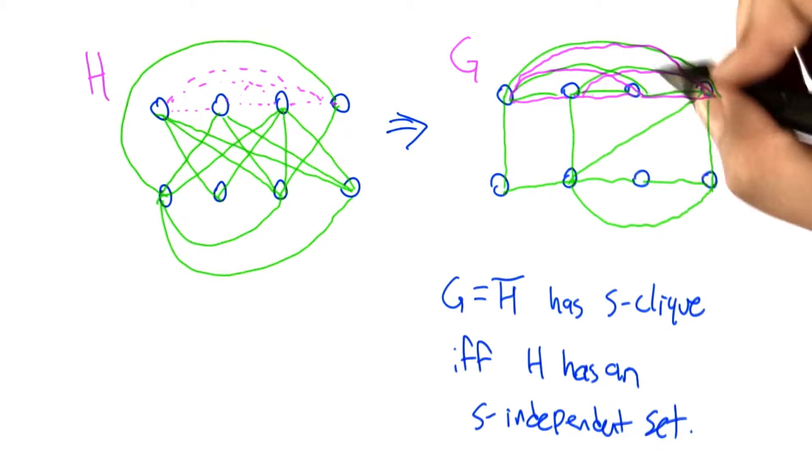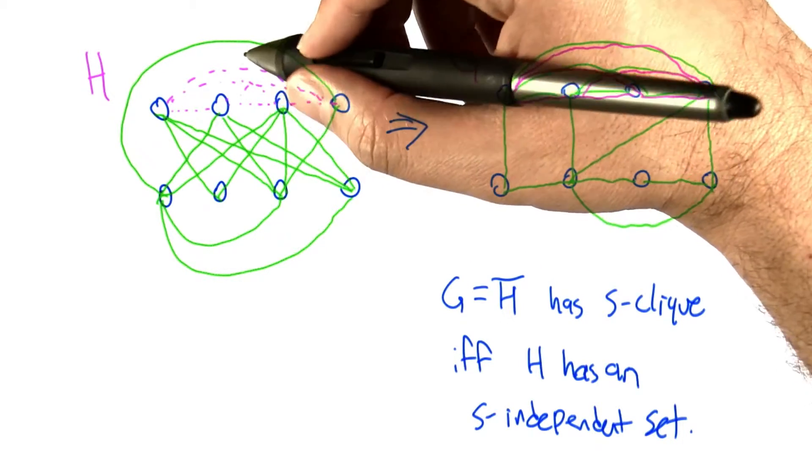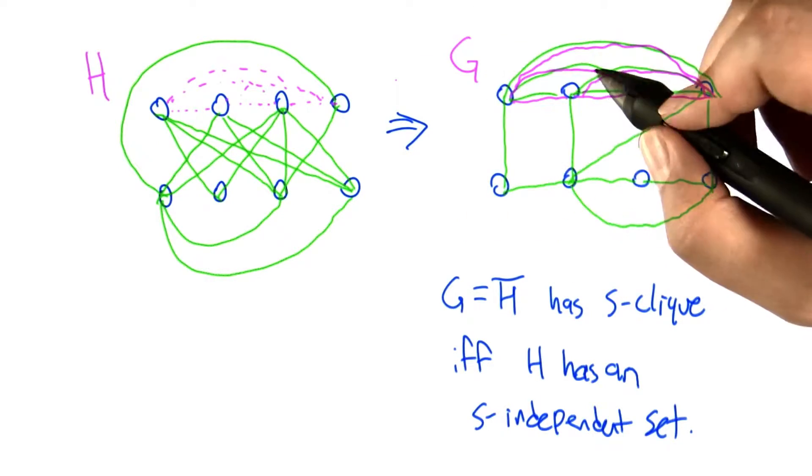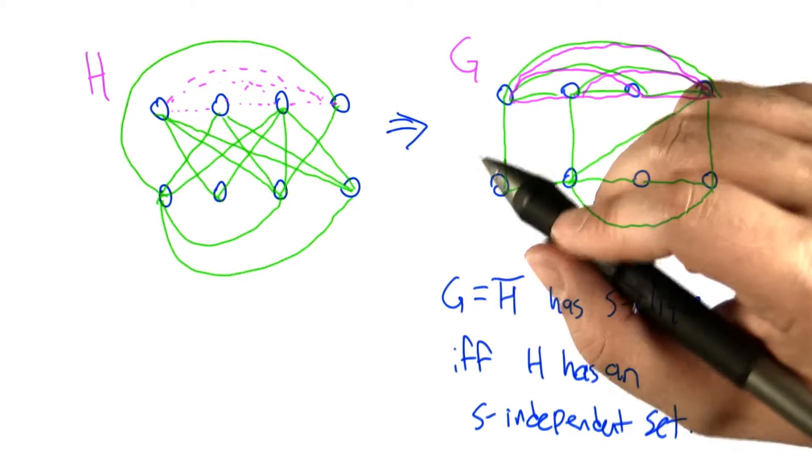Because if it has all the pairwise edges in G, then it has to fail to have all those pairwise edges in H. So that's how we can use the solution to the clique problem to solve the independent set problem.